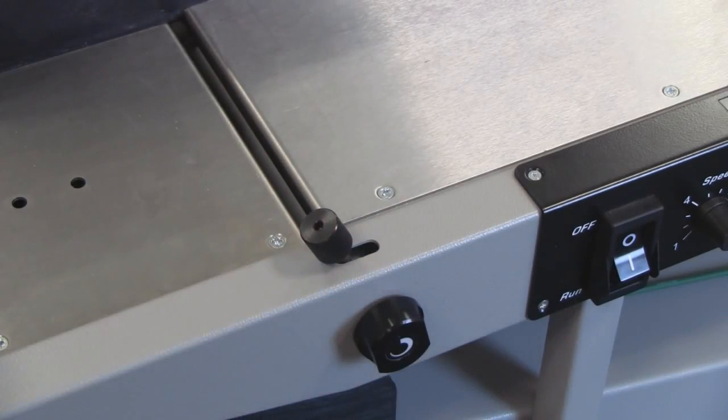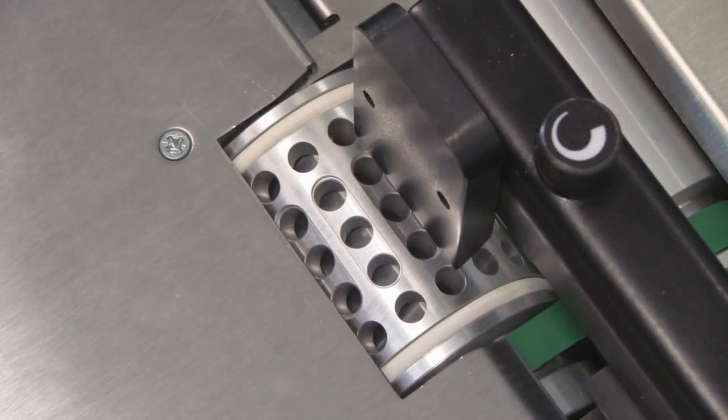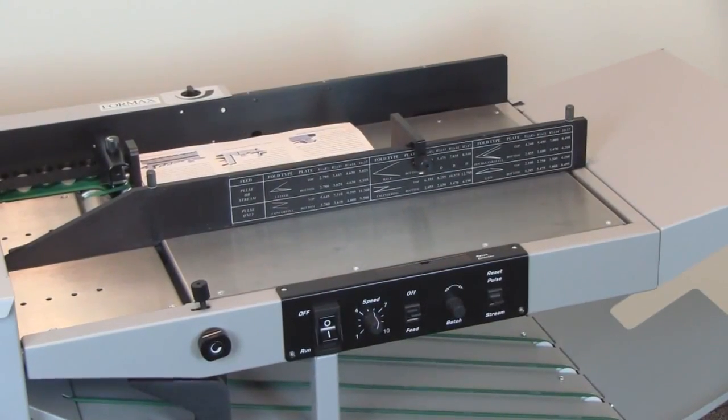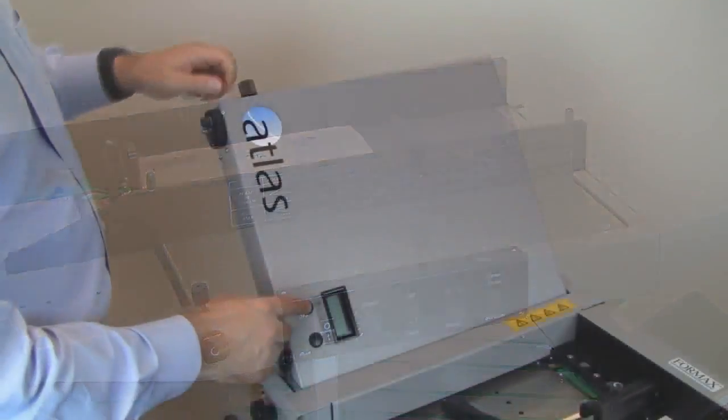And Step 5: Adjust the suction that will pull the paper in, more for heavy stock and less for lighter stock. With the in-feed adjusted, the fold plates can now be set for the fold type and paper length.